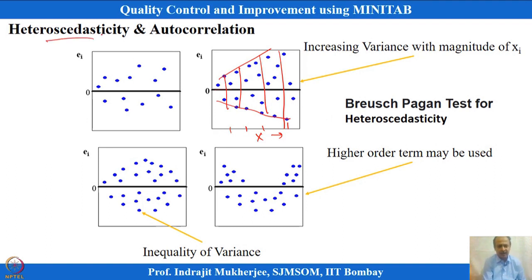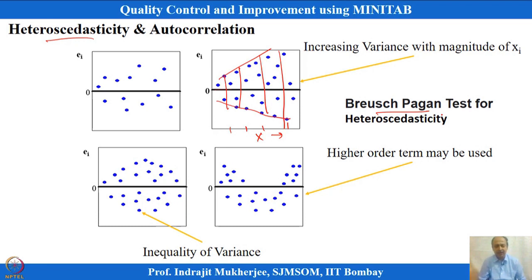When a heteroscedasticity condition exists, it can be checked by the Breusch-Pagan test, Levene's test, or similar tests, which statistically confirm whether non-constancy of variance exists. In that case, a correction is needed before interpreting the ANOVA analysis. There are variance-stabilizing transformations on Y available.